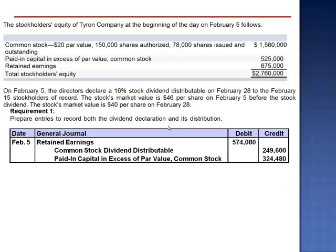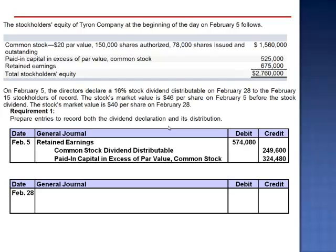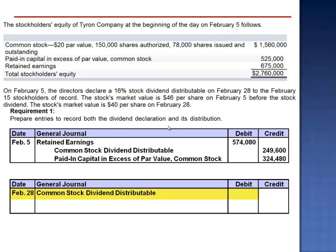There is no journal entry on February 15th, the date of record. On February 28th, the shares are actually issued and distributed to the shareholders. At which point we take the par value out of the temporary par account, debiting common stock dividends distributable for the par value of 12,480 shares, $249,600, and credit the permanent par account, common stock, $20 par value.